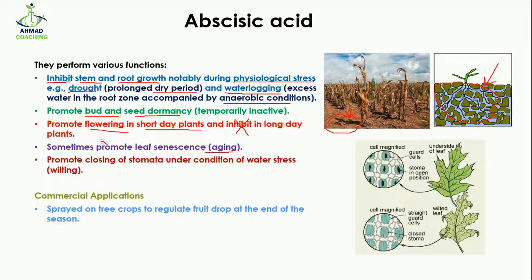It sometimes promotes leaf senescence — senescence means aging. So it promotes the aging of plant leaves, causing the leaves to no longer be green and fresh but instead become dull and dry, and they can drop from the plant.